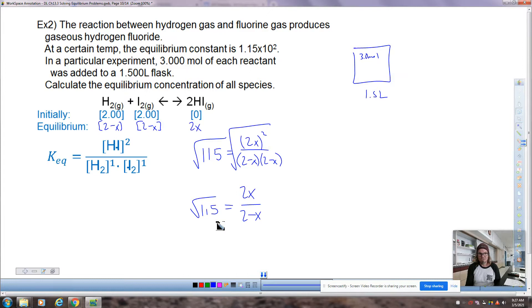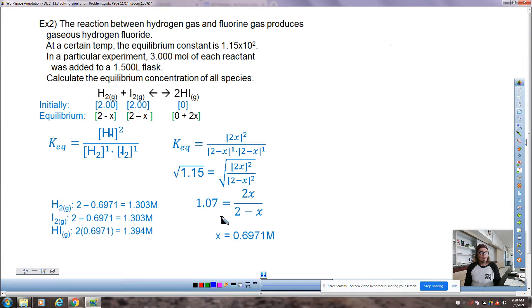This one still, we have the same denominator. So I would just square root both sides. That gets rid of the squaring. And we have just 2X over 2 minus X equals root 115. And then same thing. It's just now make it into a proportion, cross-multiply and divide, gather your X's on one side, gather your numbers on the other side, and we can do that together in class. Once you have what X equals 0.6971, then I'm going to subtract that from 2 to get my hydrogen and iodine concentrations at equilibrium. And I'm going to double that number to get my hydrogen iodide concentration at equilibrium.